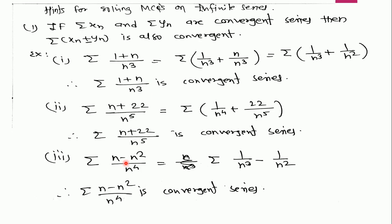See another example: if we have the series summation of (N − N²) / N⁴, which equals summation 1/N³. This is the subtraction of two convergent series, as both are P-series with P greater than 1. Therefore this series is also a convergent series.